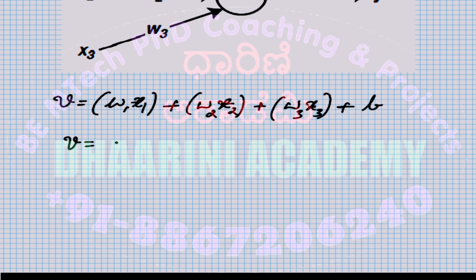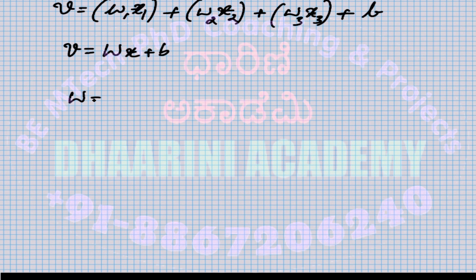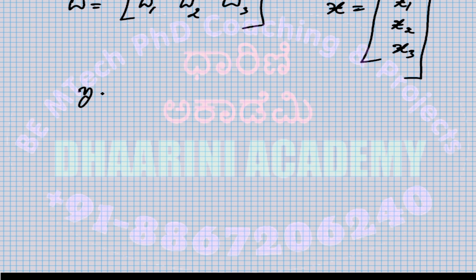The output v is calculated as v = w1·x1 + w2·x2 + w3·x3 + bias. In general, this can be represented in matrix format as W·x + b. The weight matrix is [w1, w2, w3] and the input is a column vector [x1, x2, x3], satisfying matrix multiplication conditions. This intermediate value v is then converted into the final output y by applying the activation function φ(v).